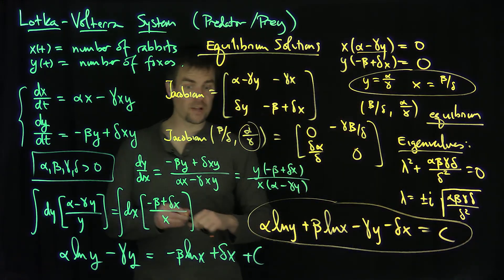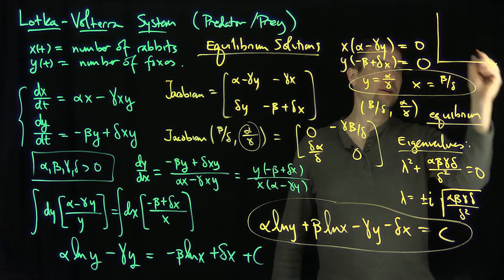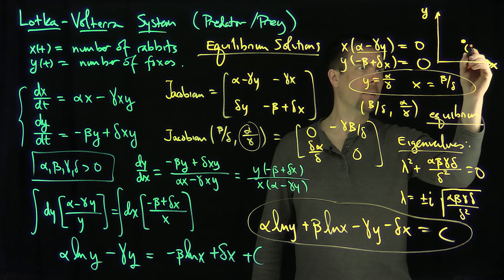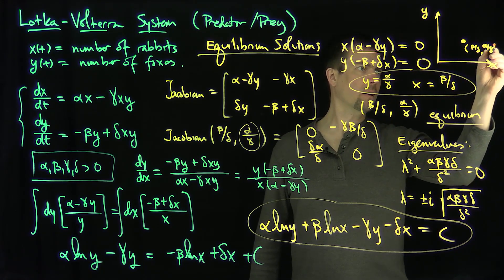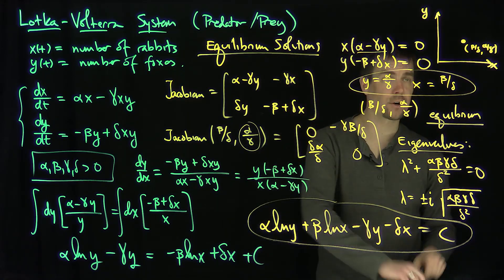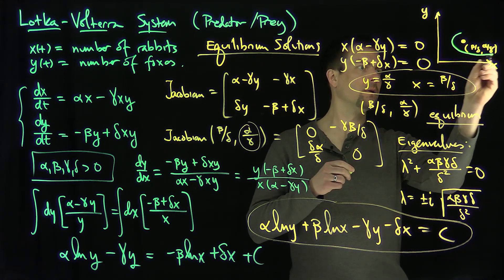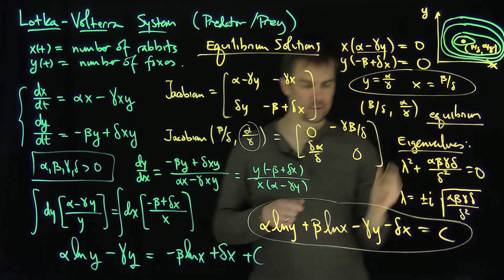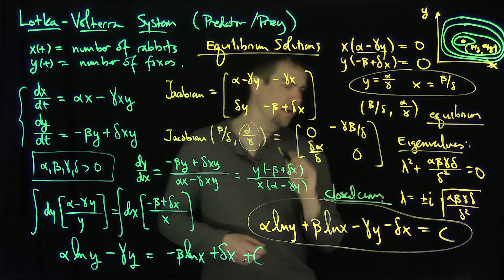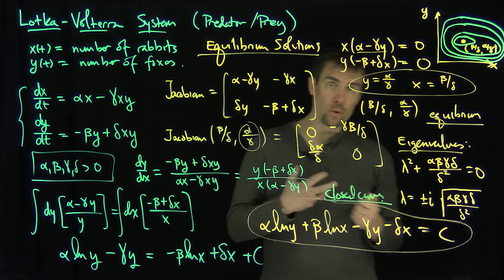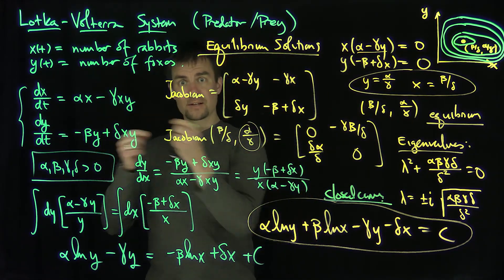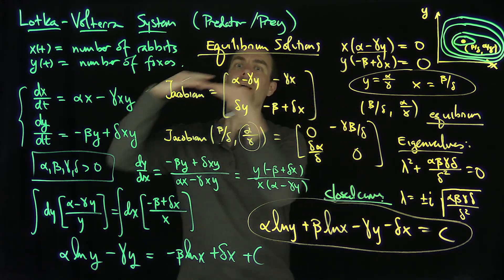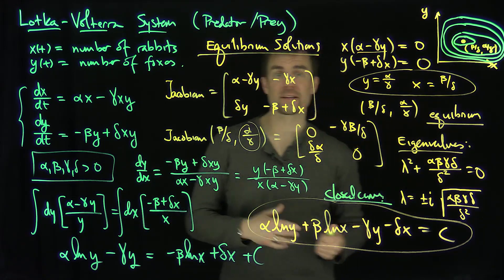If you plot these curves on a computer, what you see is the equilibrium point (beta/delta, alpha/gamma) surrounded by closed curve trajectories — these are periodic solutions around that equilibrium. Even though linearization cannot confirm it, this equilibrium point is a center for the system. There is a periodic structure: as the prey grows, there's more for the predator to eat, so prey declines and the predator grows, creating cyclical behavior. Thank you very much.